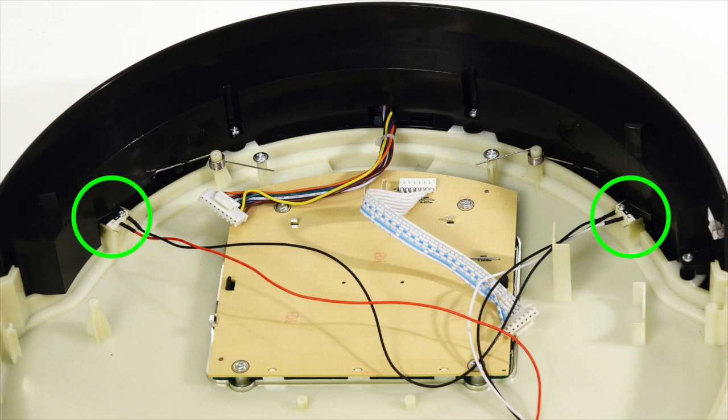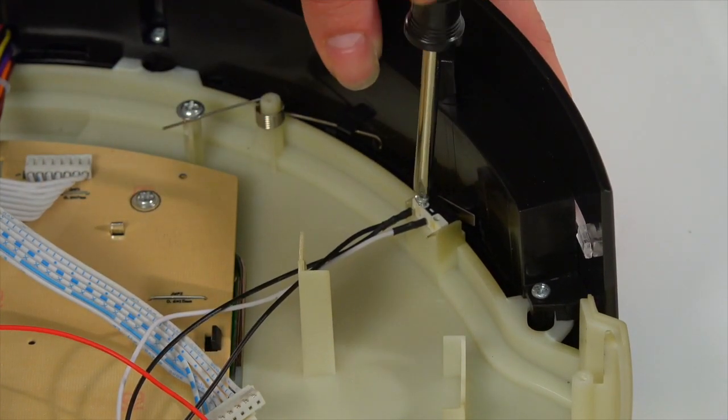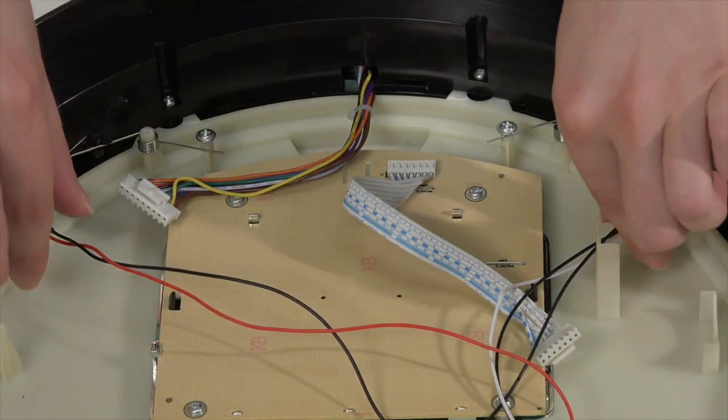To remove the original sensors, uninstall the two screws holding each sensor in place, then lift the sensors up.